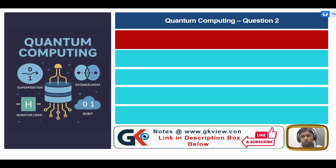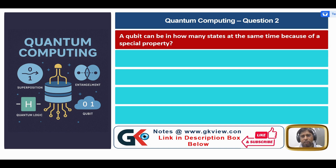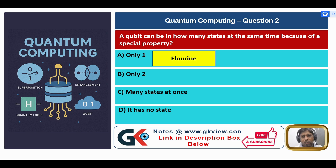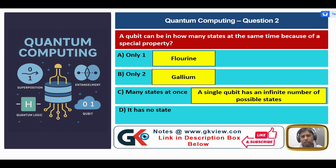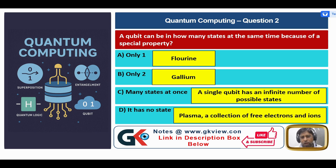Question 2: A qubit can be in how many states at the same time because of a special property? A. Only one, B. Only two, C. Many states at once, D. It has no state. Only one state is seen in fluorine. Only two states are seen in gallium. Many states at once — a single qubit has an infinite number of possible states. A plasma, a collection of electrons and ions, has no state. So, the answer is C — Many states at once.